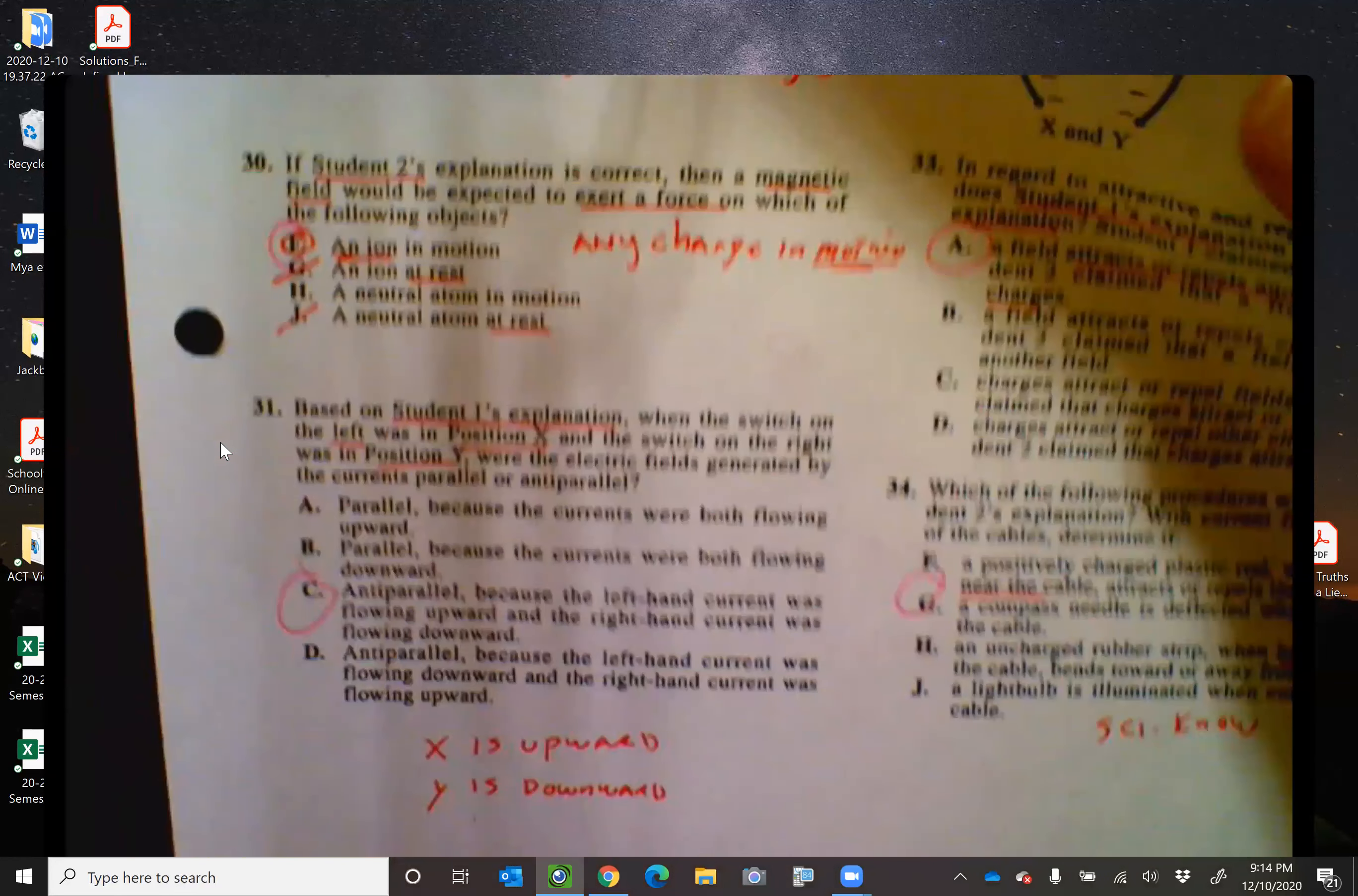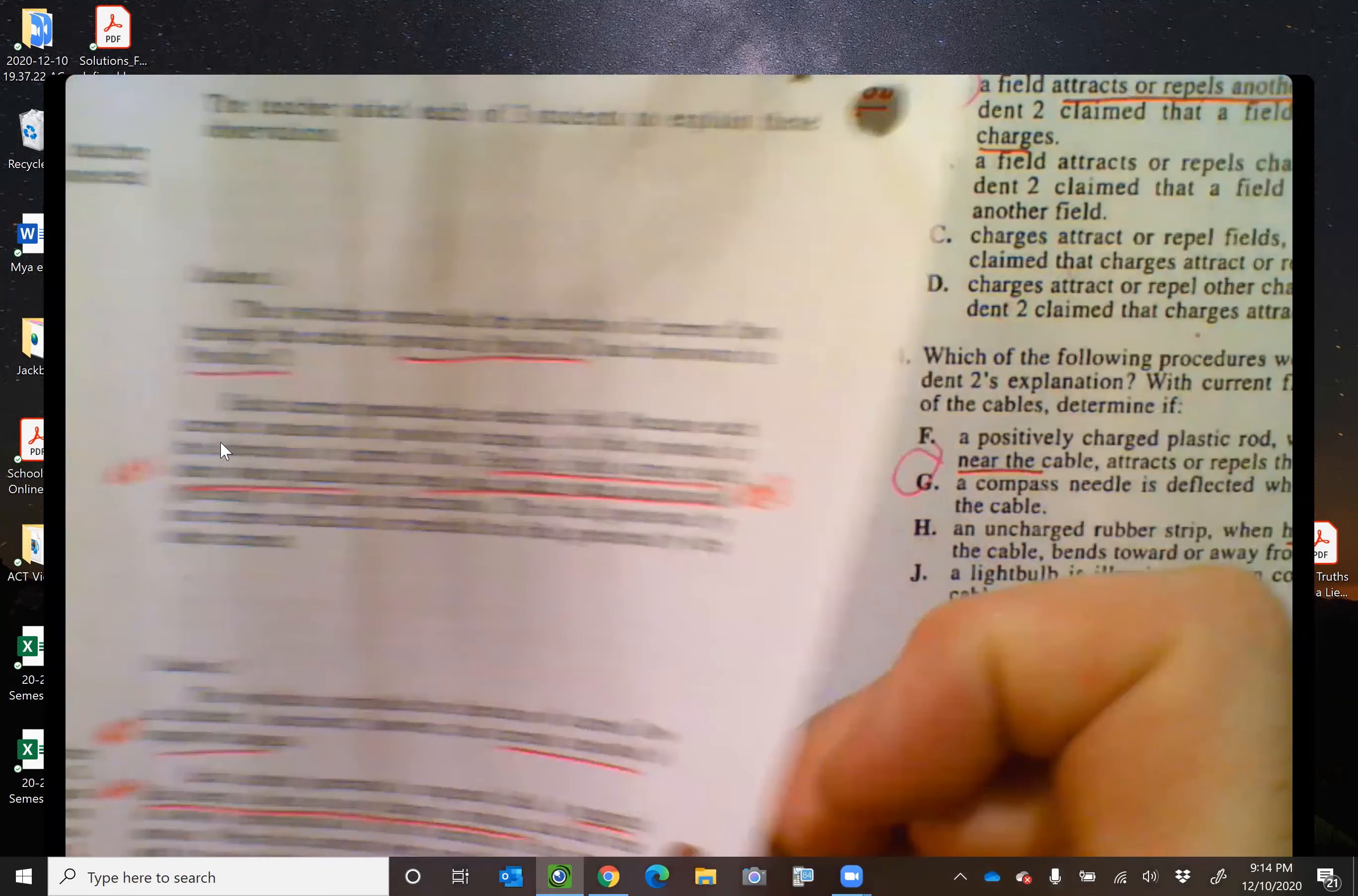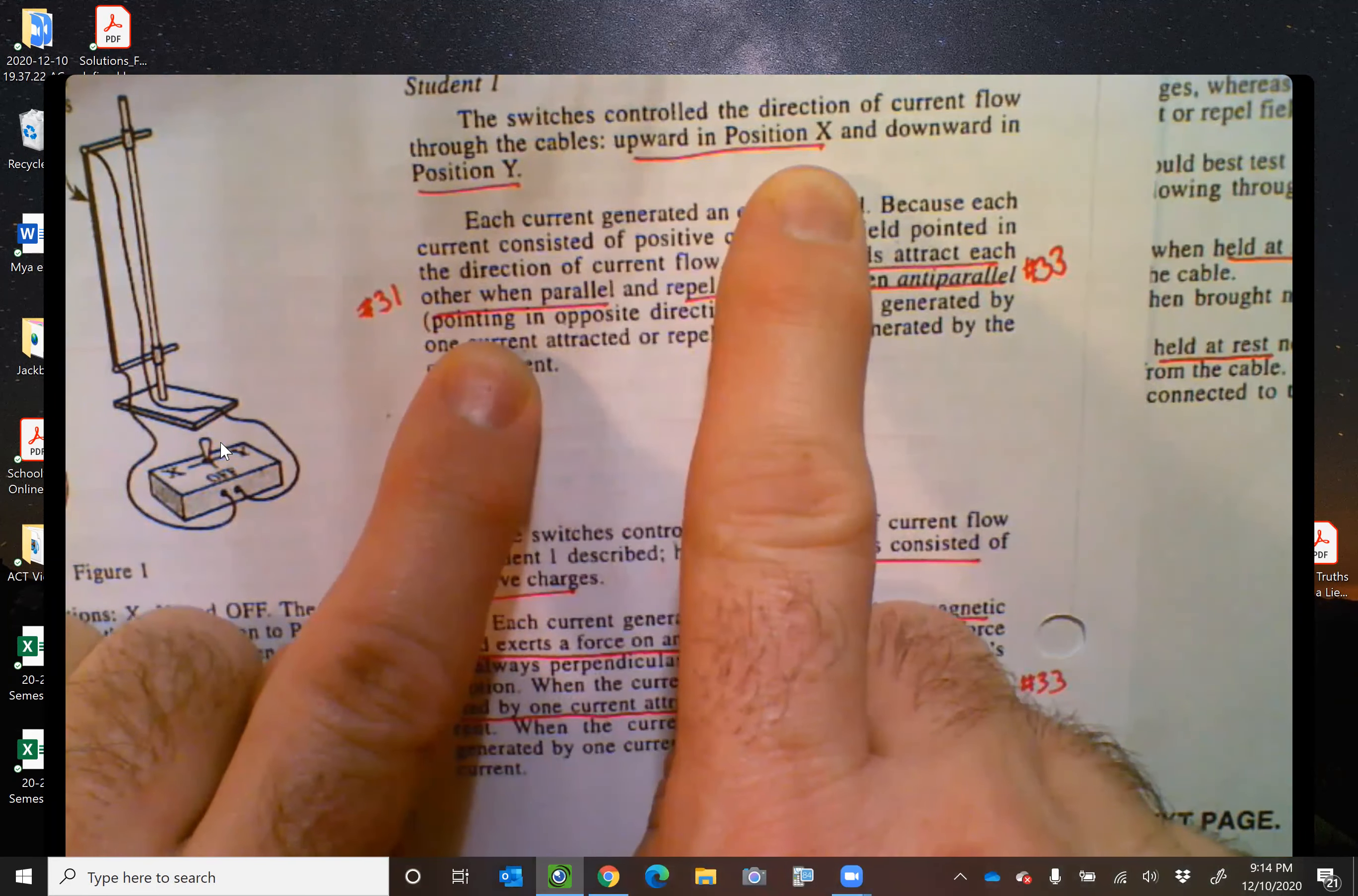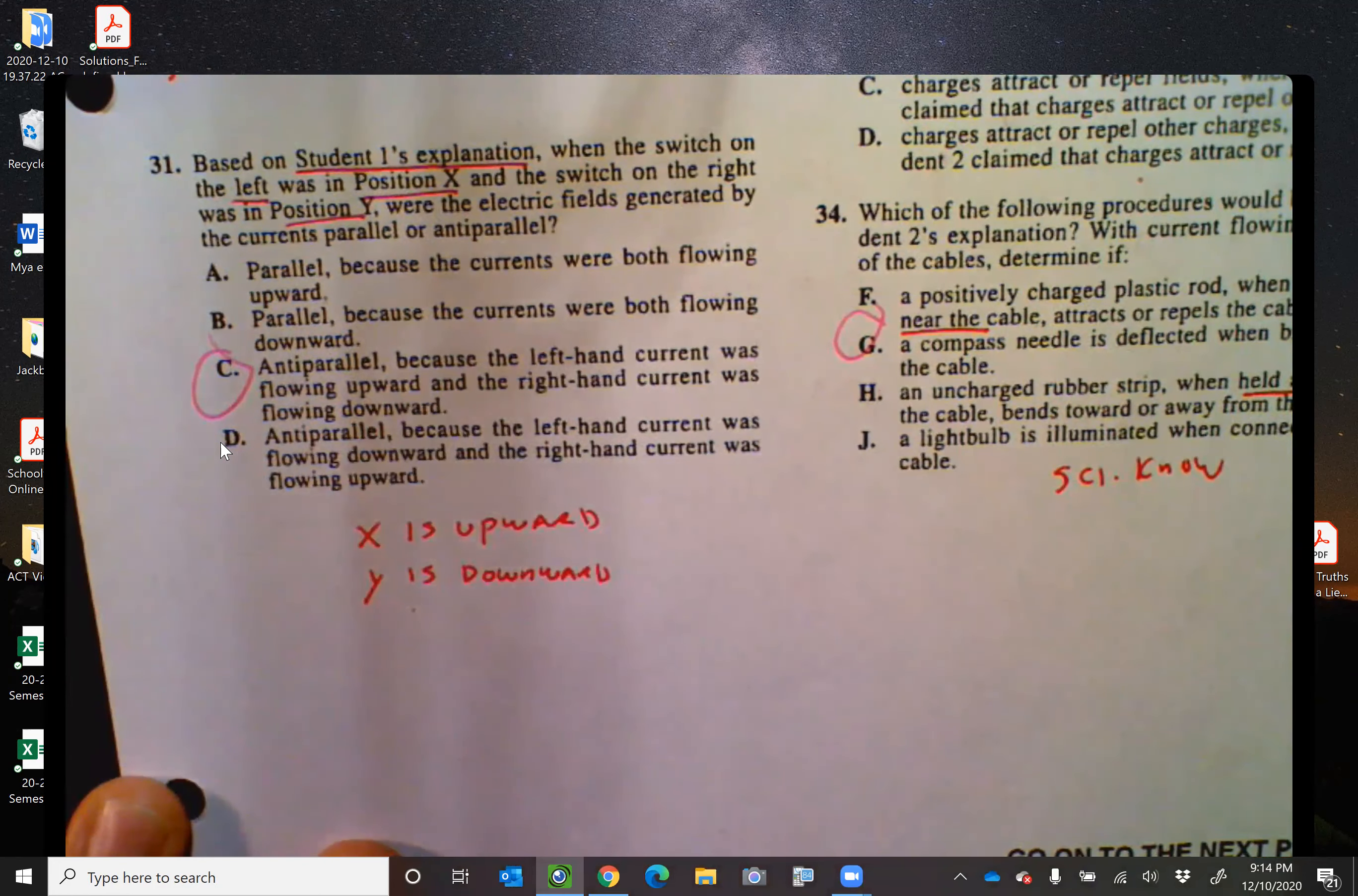Okay. Question number 31. Were the electric fields generated by the currents parallel or anti-parallel? Well, we are told that in the reading, according to student one, electric fields attract each other when parallel, repel each other when anti-parallel. Also, we're told upward is position X, downward is position Y. And that's what I wrote down here. So it's got to be anti-parallel, right? Because the left-hand current was flowing up because we were in the X, and the right-hand current was flowing down because we were in the Y.